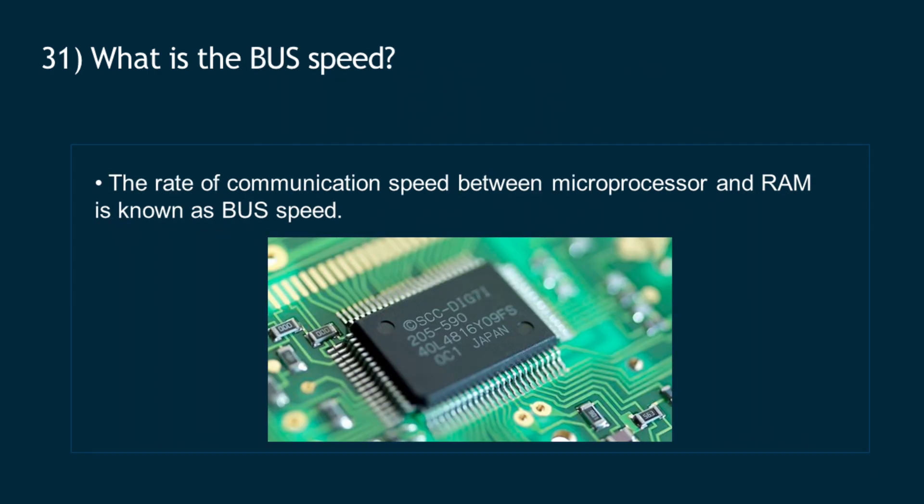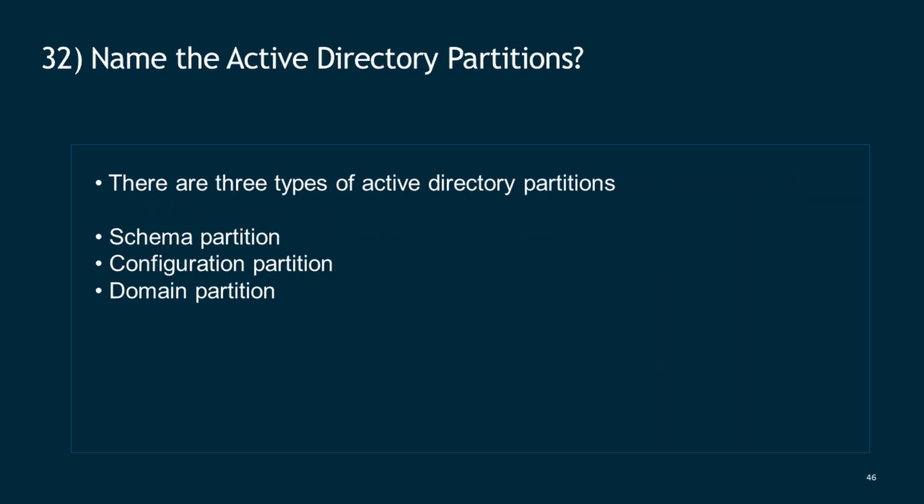Question 31: What is bus speed? The rate of communication speed between the microprocessor and RAM is known as bus speed. Question 32: Name the Active Directory partitions. There are three types of Active Directory partitions: Schema partition, Configuration partition, and Domain partition.